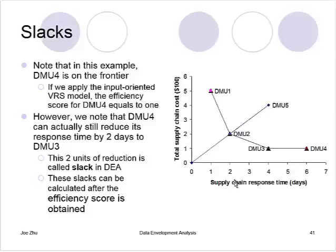If you use the input-oriented model — because you only have two inputs — the efficiency score for DMU 4, 3, 2, 1 can be 1. That's why they are on the frontier. Now, if you look at DMU 4 closely, you will notice that DMU 4 can actually reduce two units of this particular input to reach DMU 3. So although the efficiency score for DMU 4 is 1, indicating we cannot reduce the two inputs at the same rate, we still can reduce one of the inputs by two units.